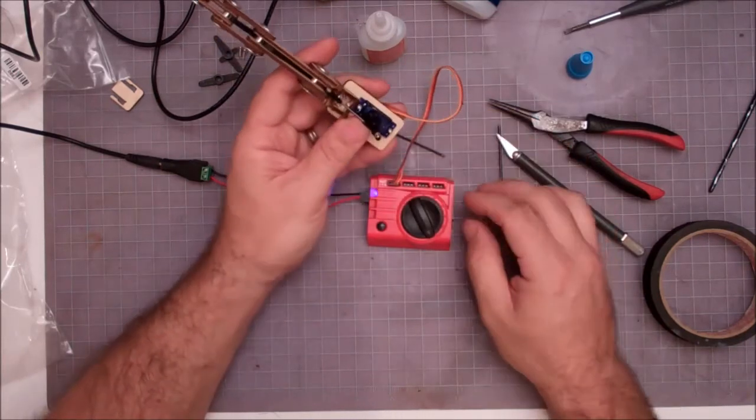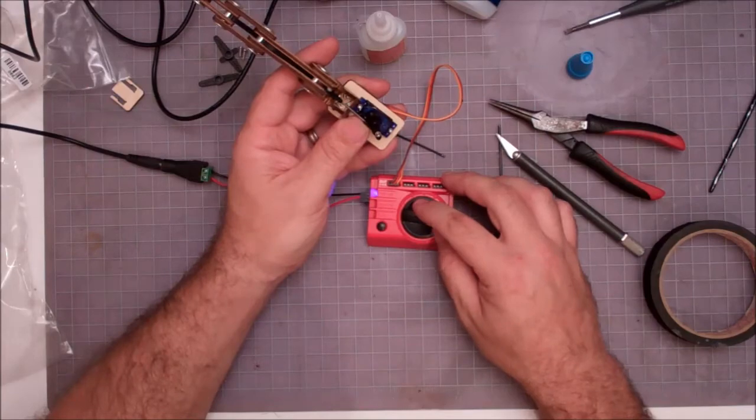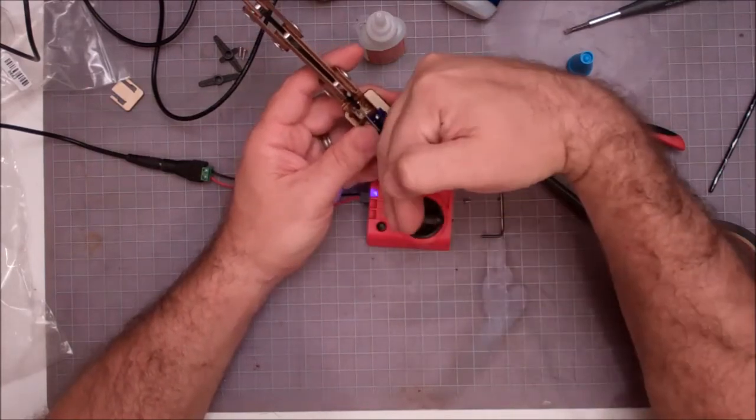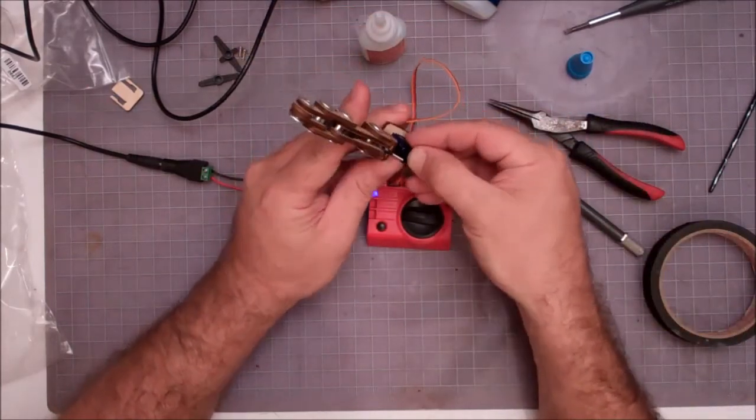Now I will usually back this off just a hair which rotates that servo horn back a little bit and then snap my horn on.